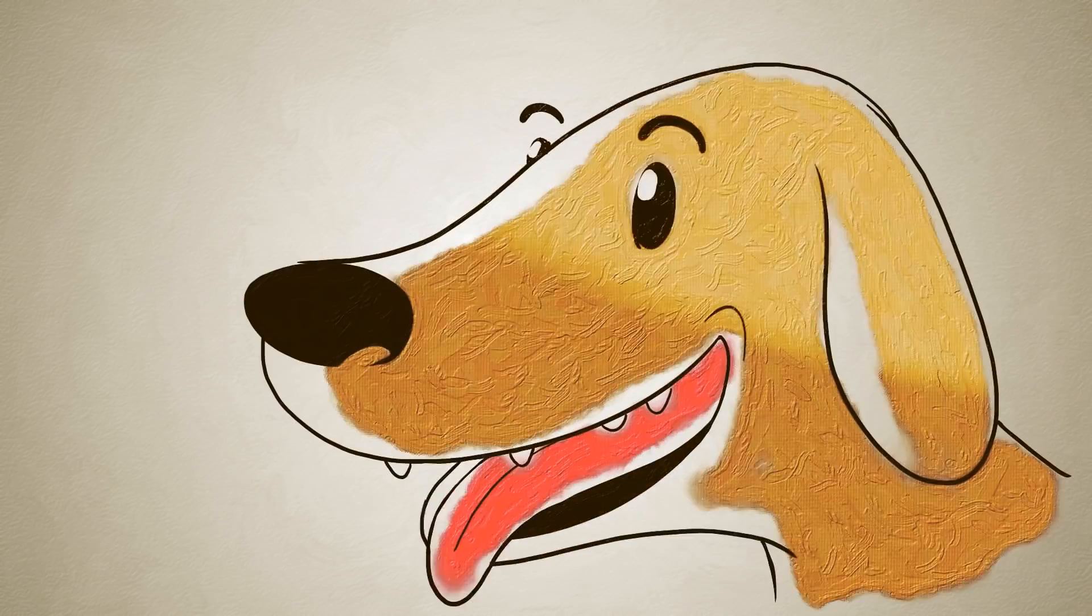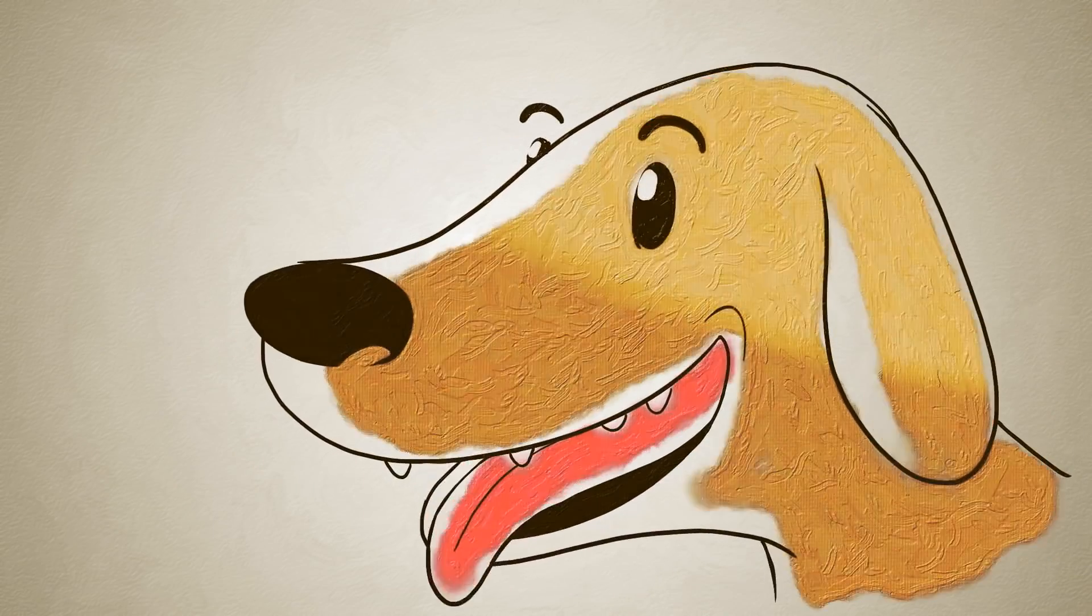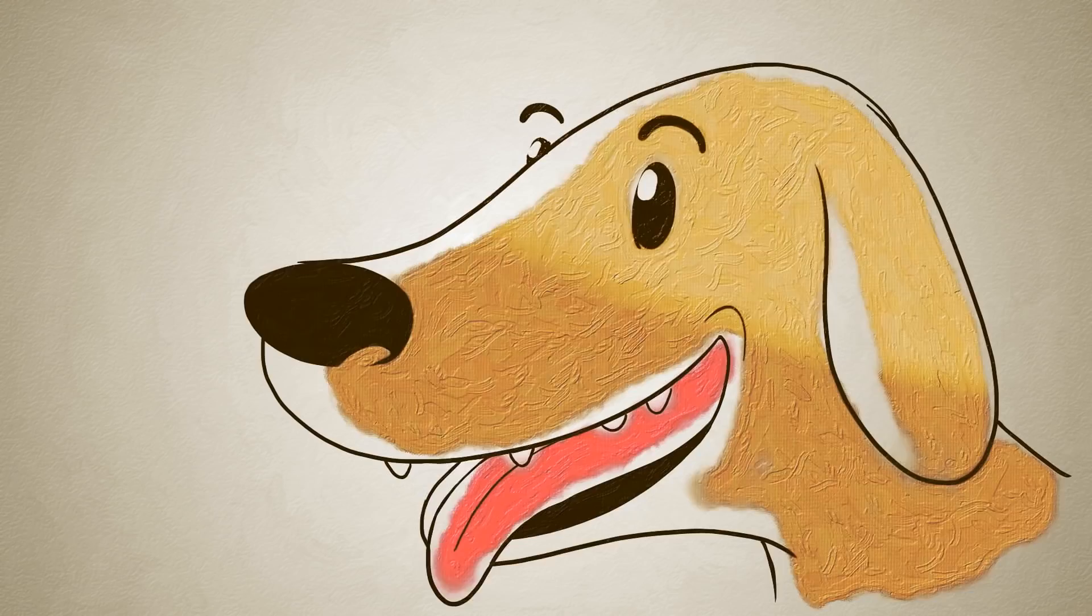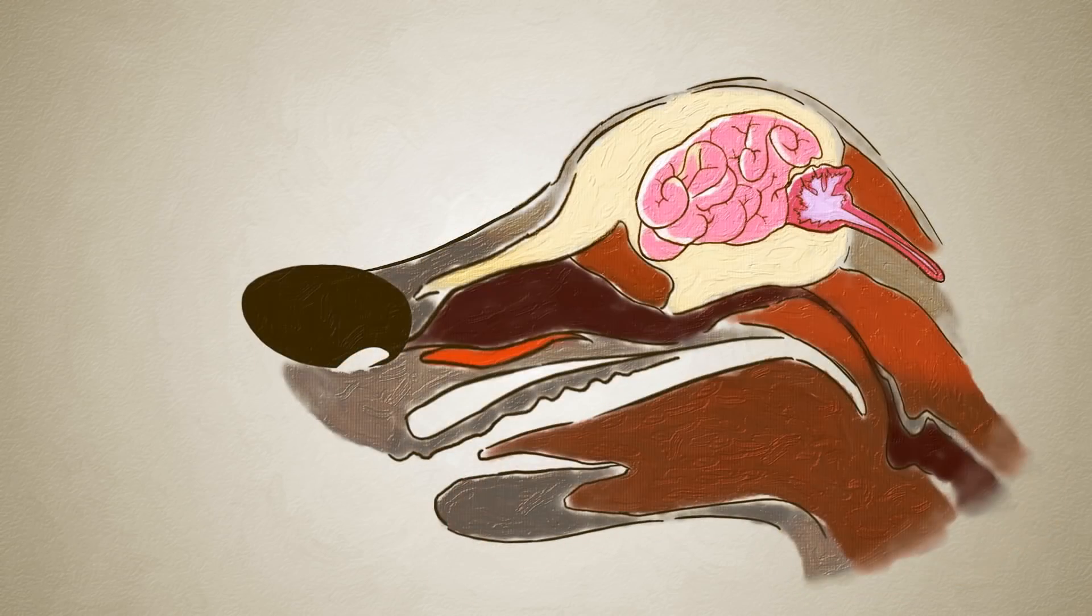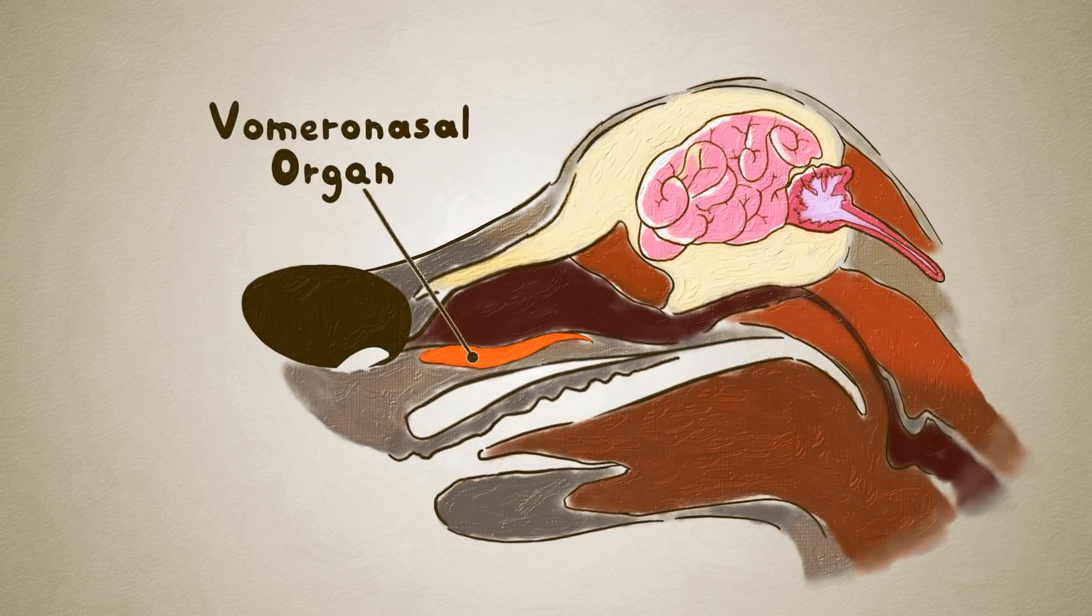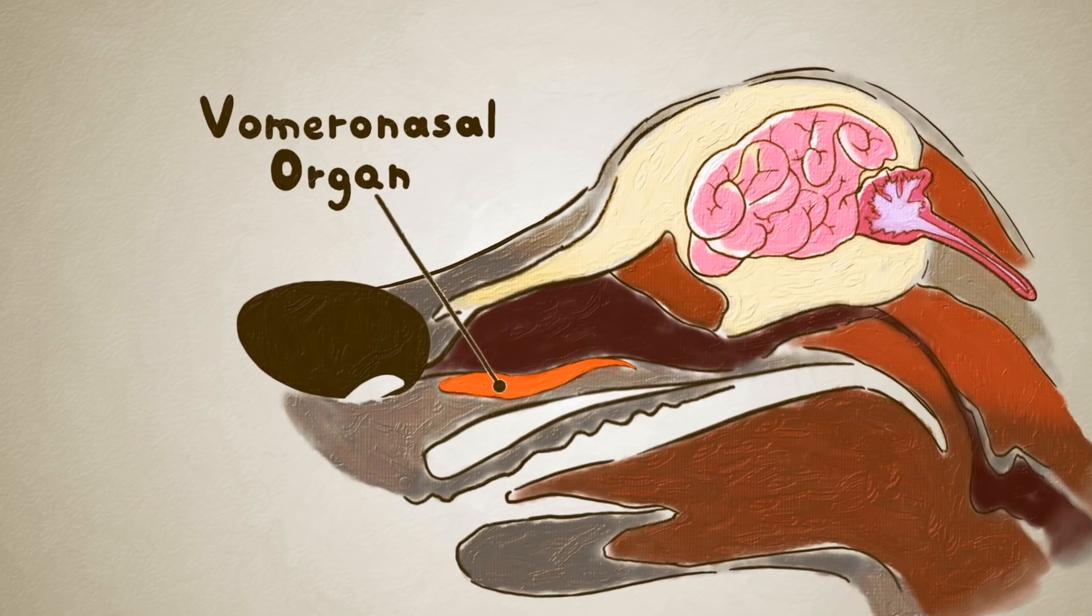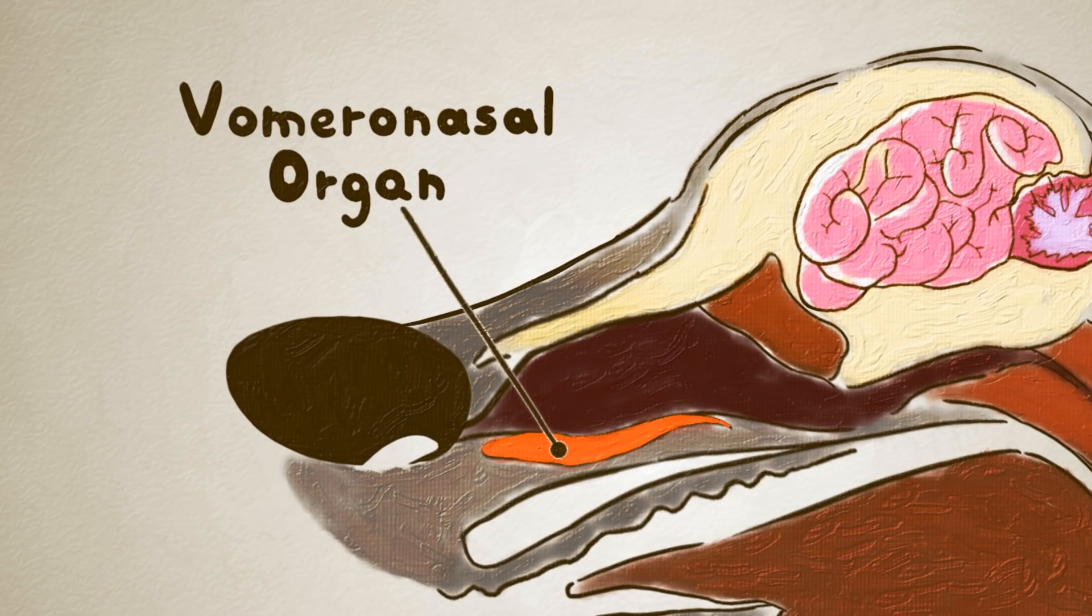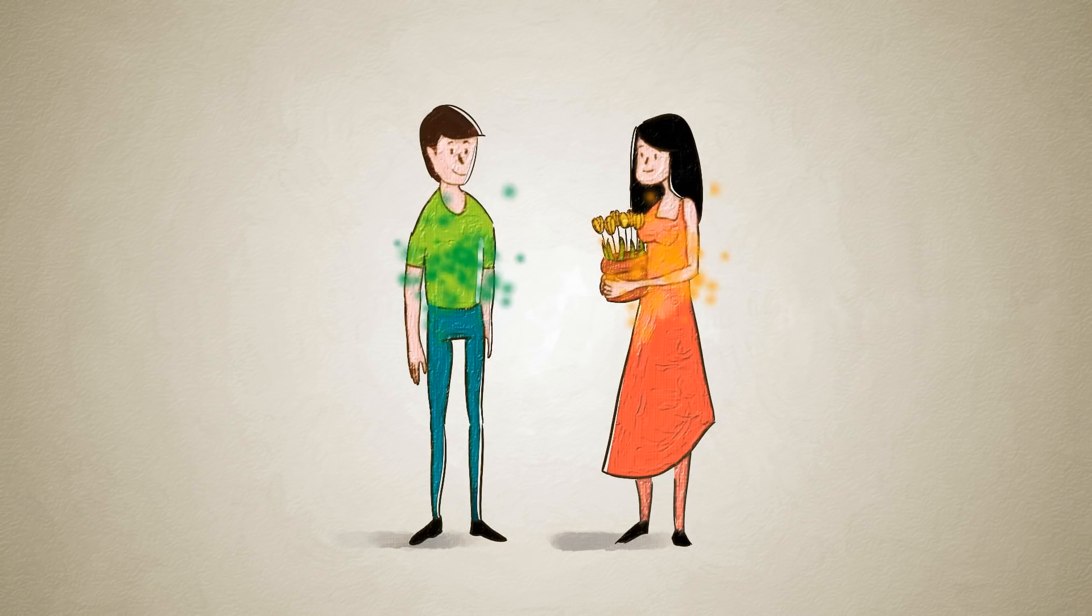Besides being much more powerful than ours, a dog's sense of smell can pick up things that can't even be seen at all. A whole separate olfactory system, called the vomeronasal organ, above the roof of the mouth, detects the hormones all animals, including humans, naturally release.